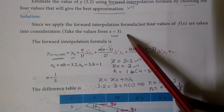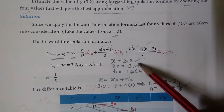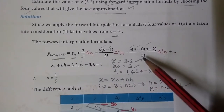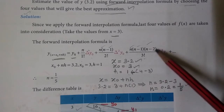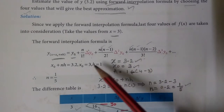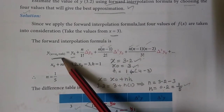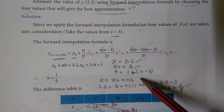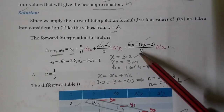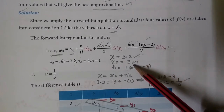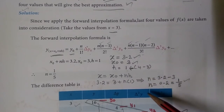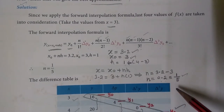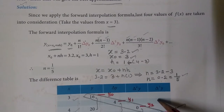The x value given in the question is 3.2. The starting point x0 is 3, so the difference is x minus x0. The step width h is 1. So substituting, n equals (x - x0) / h equals (3.2 - 3) / 1, which gives n equal to 0.2. Then we will go to the difference table.